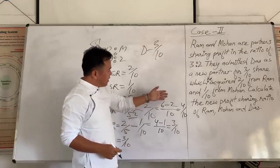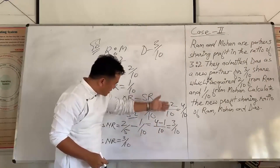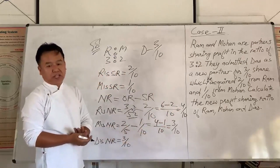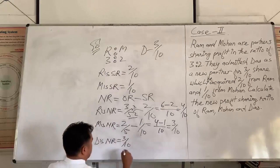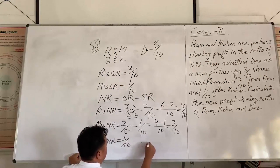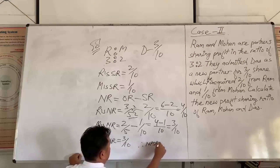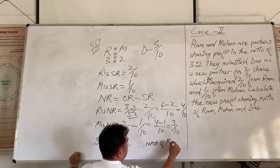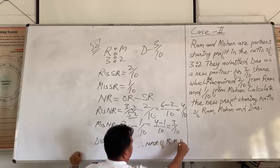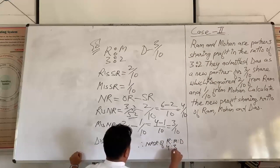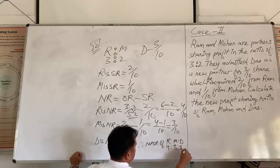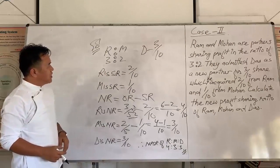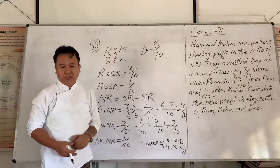Since all the denominators are already the same, we can directly convert the fractions into ratio. Therefore, the new profit sharing ratio of Ram, Mohan and Das is 4 is to 3 is to 3. This is how we calculate new profit sharing ratio for case number 2.